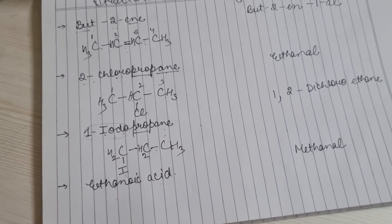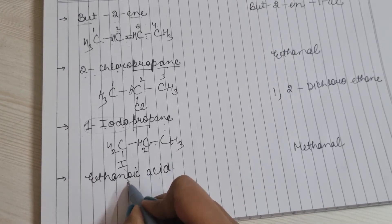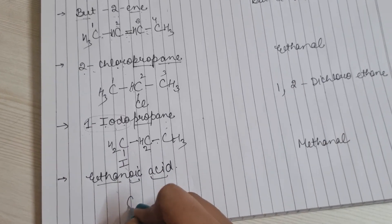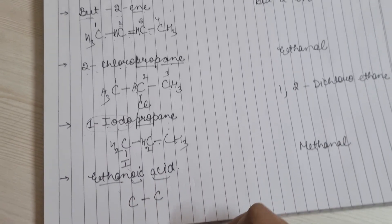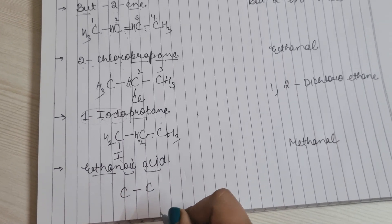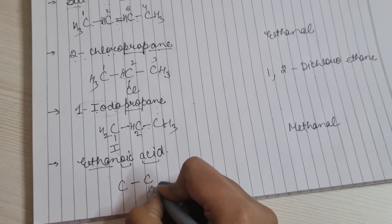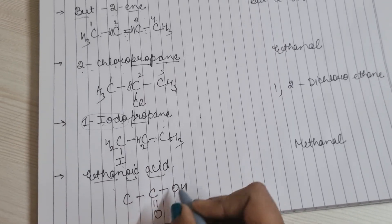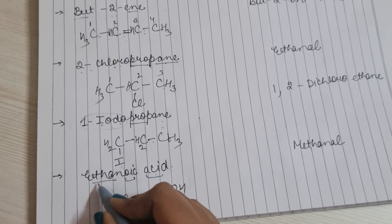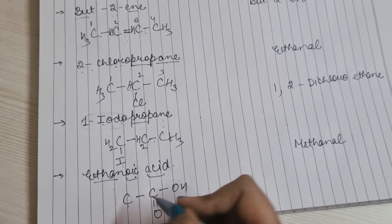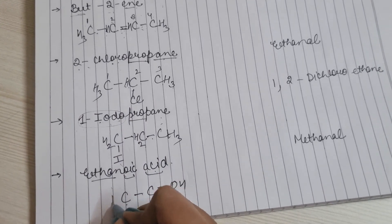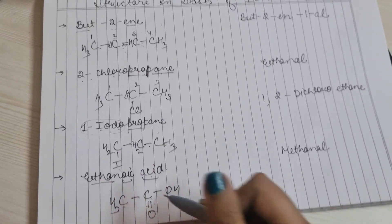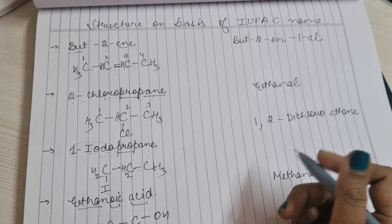Ethanoic acid: 'ith' मतलब 2 carbon, 'oic acid' याद रखो — यह carbon वाला functional group है, तो carboxylic acid लगाओ। Carboxylic acid group लगाने के बाद carbon 1 की 4 valency पूरी, carbon 2 को 3 hydrogen। This is the structure of ethanoic acid।